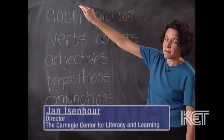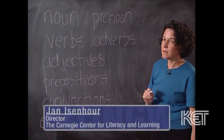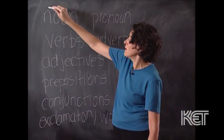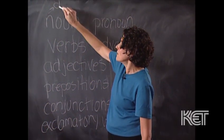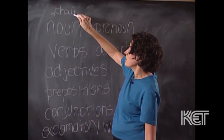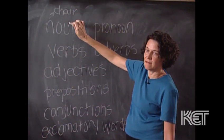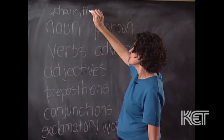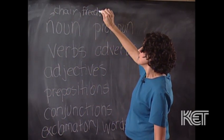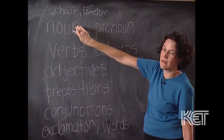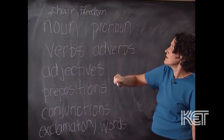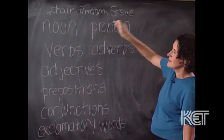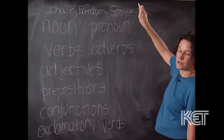Nouns are usually described, as you probably remember, as referring to people, places, things, or ideas. So the word 'chair,' as a part of speech, is a noun — it's a thing. 'Freedom' is a noun — it's an idea. 'Steve' is a noun — it refers to a person.